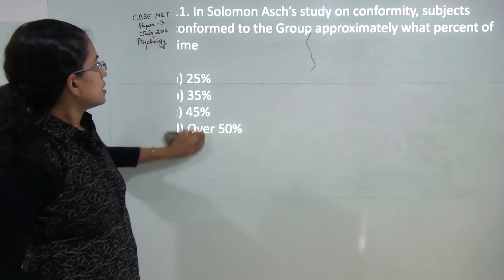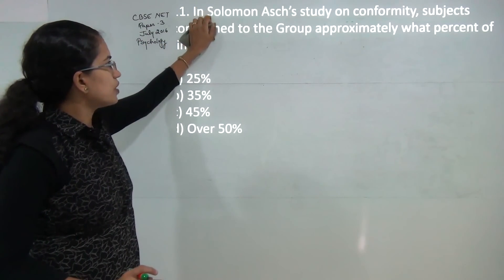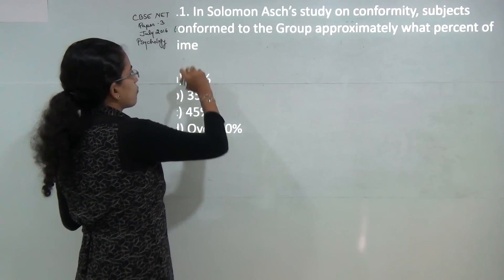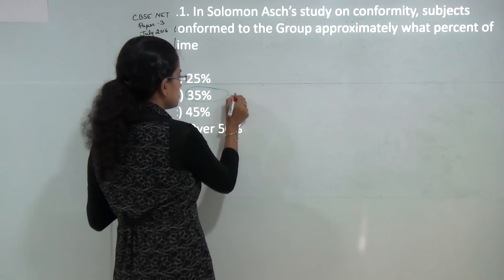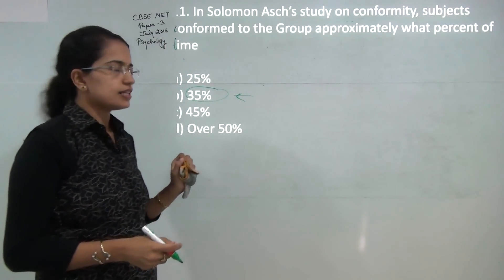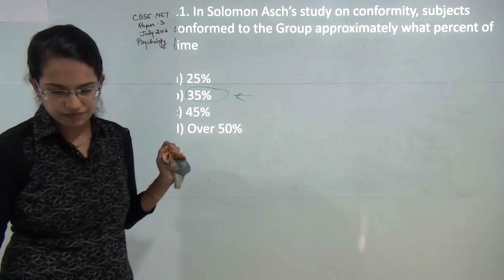Next question: In Solomon Asch's study of conformity, subjects conformed to the group approximately what percent of the time. The correct answer here was 32 percent of the time on average. The nearest match here is 35 percent, so we will put the answer as 35 percent.